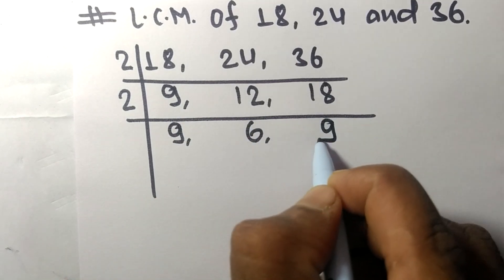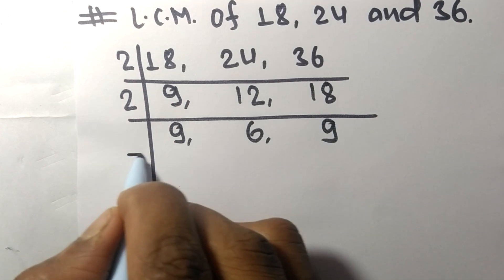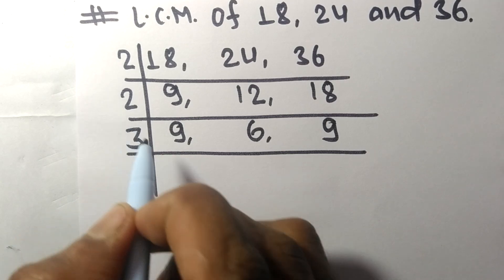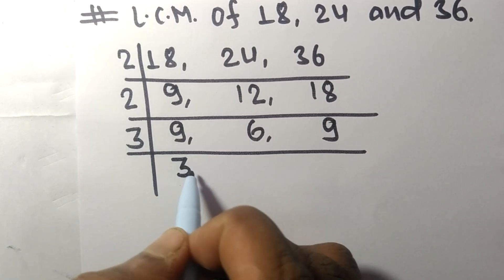Now all these numbers are divisible by 3. 3 times 3 means 9, 3 times 2 means 6, 3 times 3 means 9.